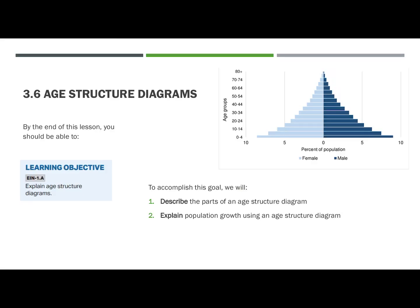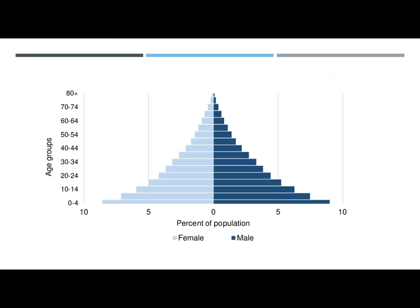Mrs. McHale. By the end of this lesson you should be able to explain age structure diagrams. We're going to do this by describing the parts of an age structure diagram and then explaining population growth using the age structure diagram. It's pretty critical on the AP exam that you're able to interpret a lot of information just by looking at one of these age structure diagrams, so we're going to try to dissect that out today.